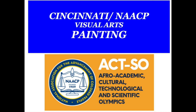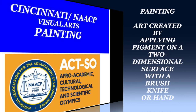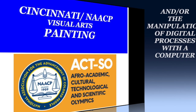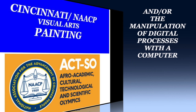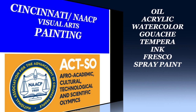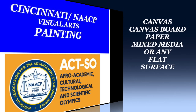Painting is art created by applying pigment on a two-dimensional surface with a brush, knife, or hand, and the manipulation of digital processes with a computer. Examples include but are not limited to oil, acrylic, watercolor, gouache, tempera, ink, fresco, spray painting, etc., applied on a canvas, canvas board, paper, mixed media, or any flat surface. So make sure y'all keep that in mind.